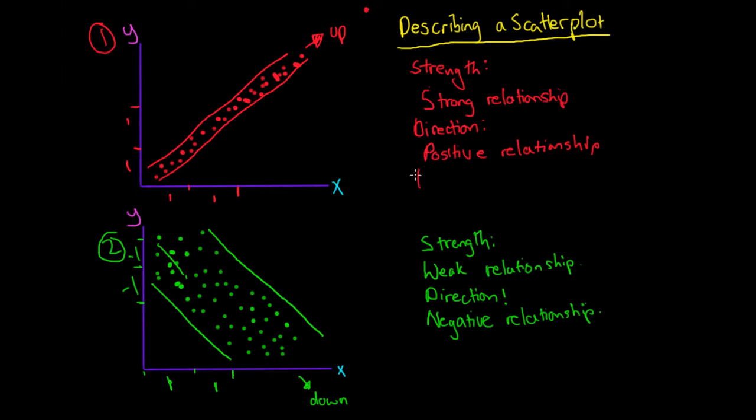The last sort of feature which we use to describe is form. So we have two types of form. And I'll write these over here. So we've got linear, which means it's a straight line. And then we have nonlinear, which is basically just not a straight line.